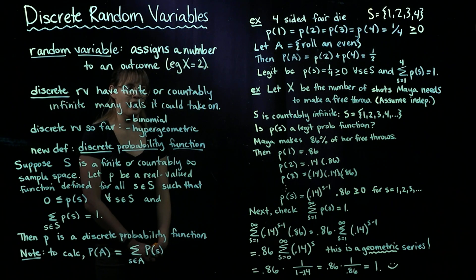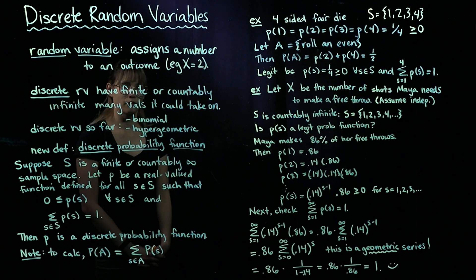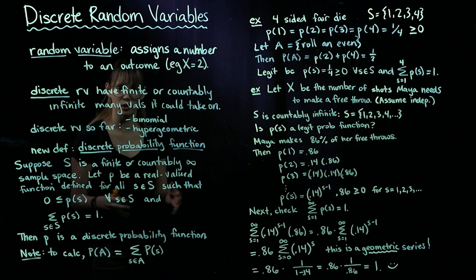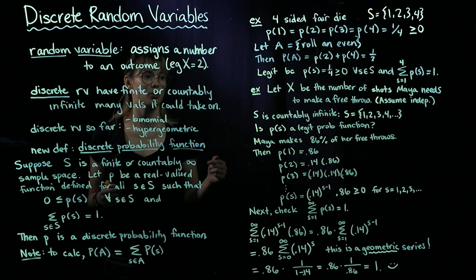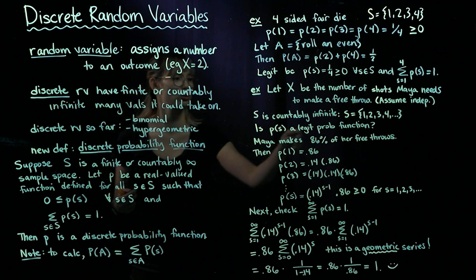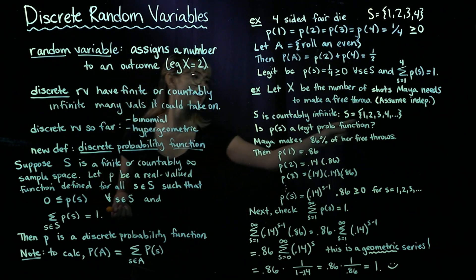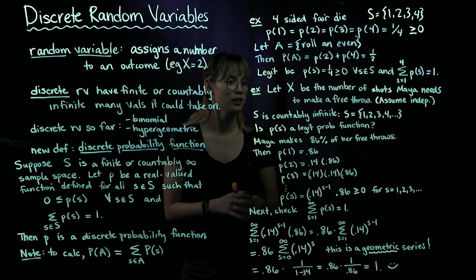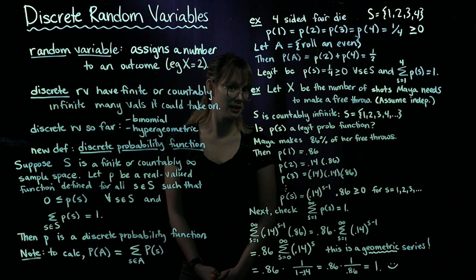Let's talk about another example. We have Maya Moore, who's a basketball player for the Minnesota Lynx. We're going to let X be the number of shots that she needs to make her first free throw. She could make her very first free throw, which would mean X equals 1. Or she could shoot, miss, and then make the second one, so X equals 2. Or she could miss, miss, make it, so X equals 3, and so on. We see that S is countably infinite because there's no upper bound to the number of shots that would be necessary.